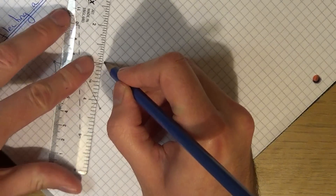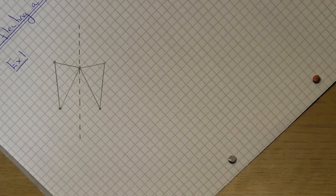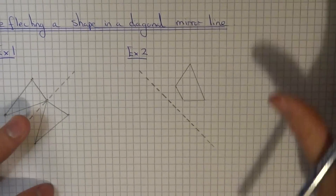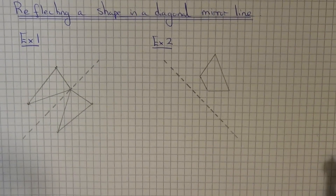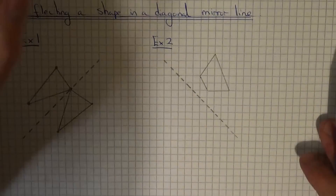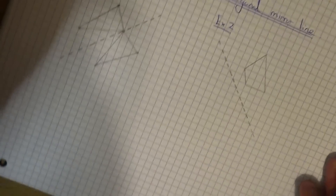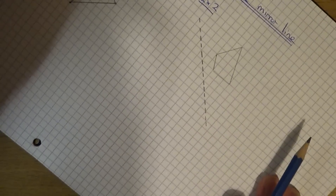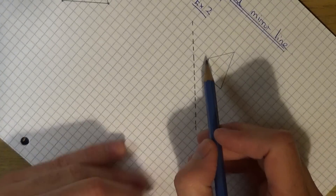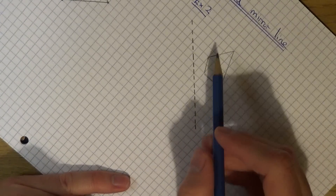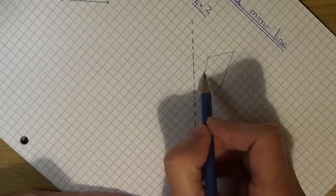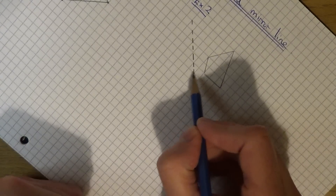And that's our first reflection done. Let's move on to example two. In this one we need to reflect a quadrilateral in the diagonal mirror line. So again let's turn the page around so the mirror line is directly in front of you. Again you need to count the shortest distance to the mirror line, and it is the same distance on the other side, perpendicular to the mirror line.